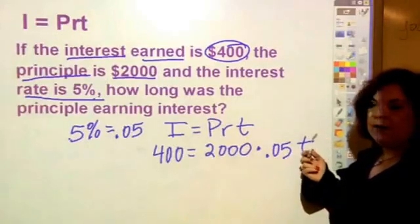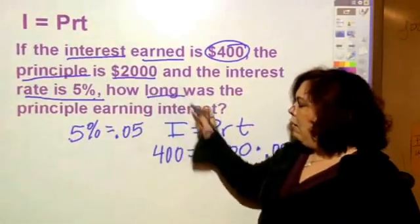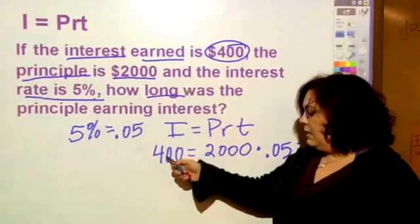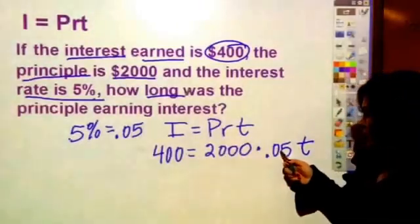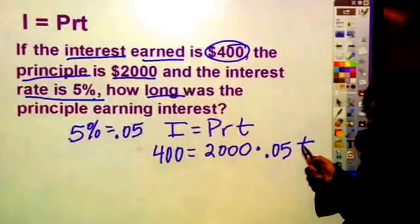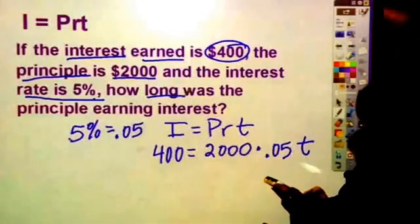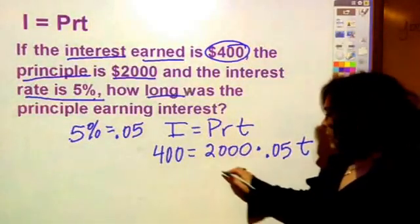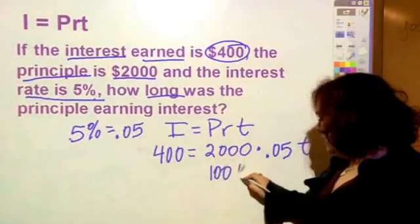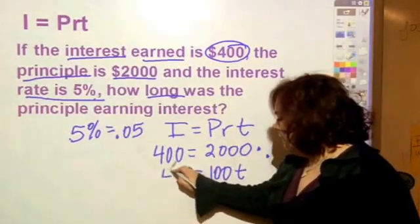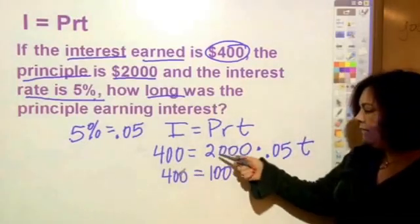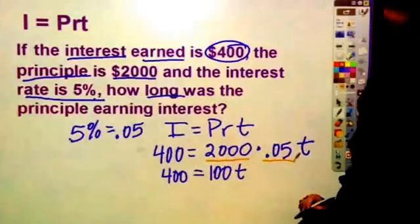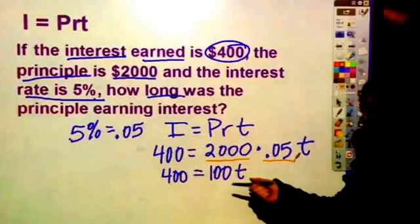Times the time, and that's my variable - that's what it's asking for, how long was it earning interest. So now I have 400 = 2000 × 0.05 × t. I'm going to calculate 2000 times 0.05, which equals 100. So 400 = 100t.